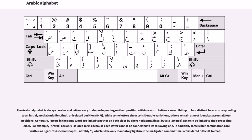For example, the word 'Ararat' has only isolated forms because each letter cannot be connected to its following one. In addition, some letter combinations are rewritten as ligatures — special shapes — notably the lam-alif, which is the only mandatory ligature; the unligated combination is considered difficult to read.